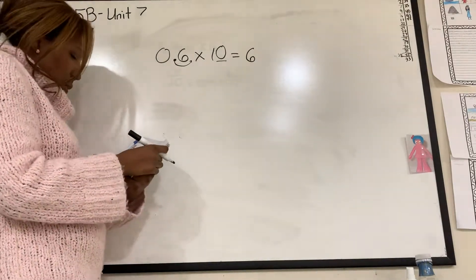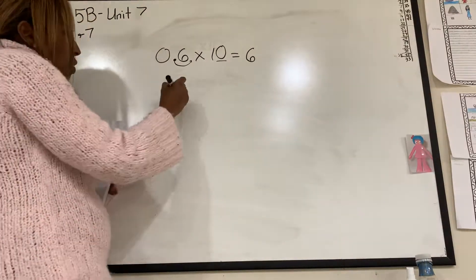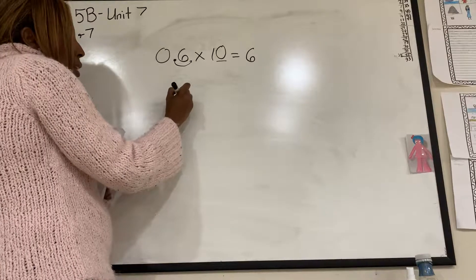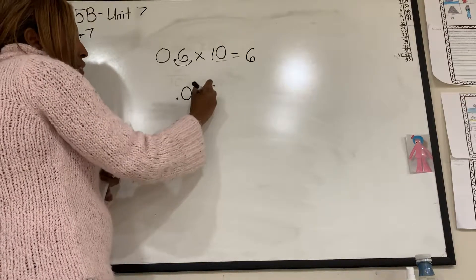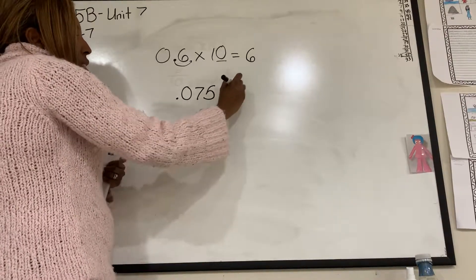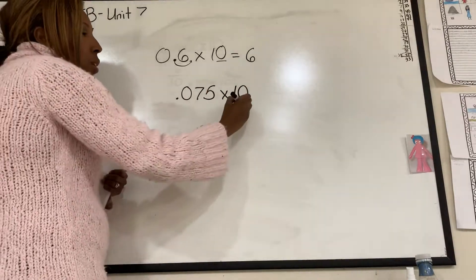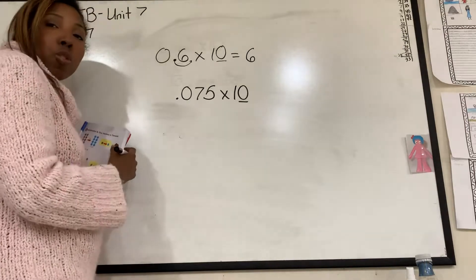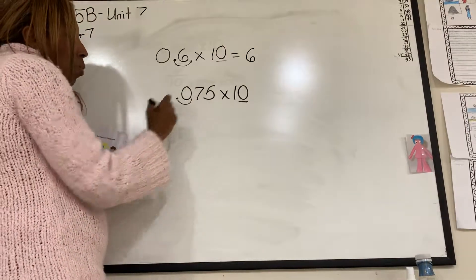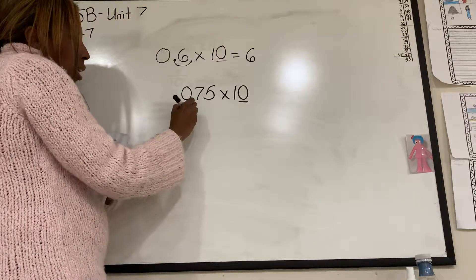Okay, so let's try another one. If I have 0.75 times 10. Well, I have one zero. So that means I'm going to move my decimal one spot. So it's going to be 7.5.